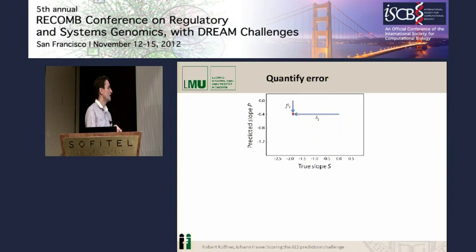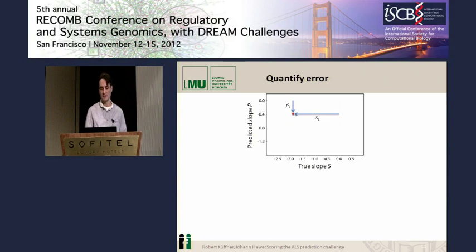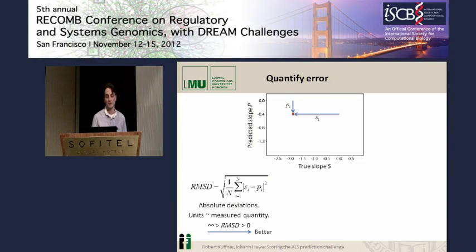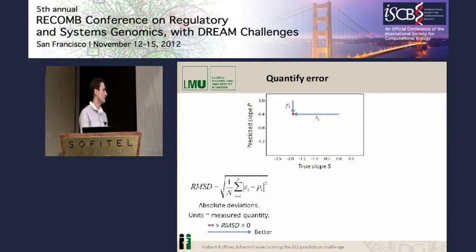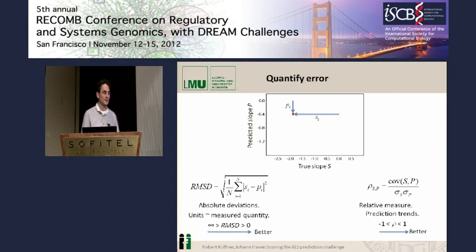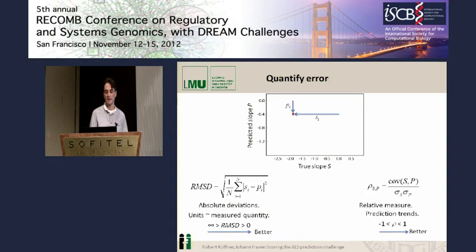In order to score and compare the participants, we need a scoring metric. For example, one patient has a true slope of minus two and a predicted slope of minus 0.4 points per month — quite a large absolute deviation. To get a measure of total absolute variation across all 625 patients, we can use the RMSD, where lower values are better. As an alternative, we can use Pearson's correlation coefficient, which is a relative measure that tests whether trends in the data were predicted correctly, with larger values being better.